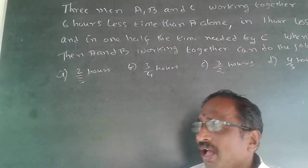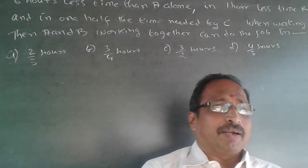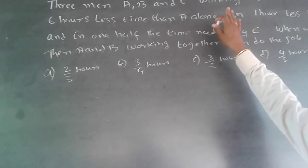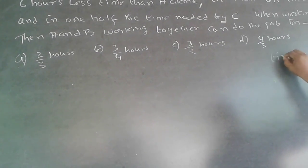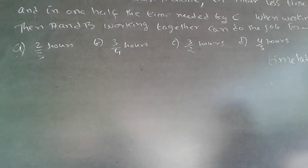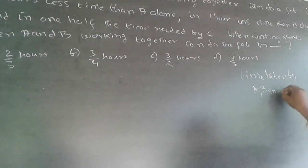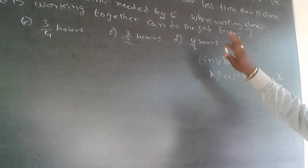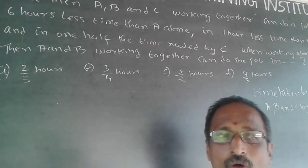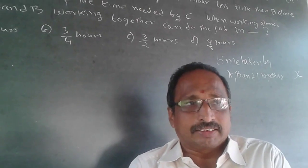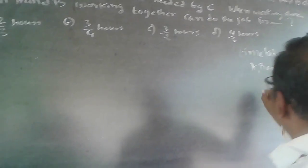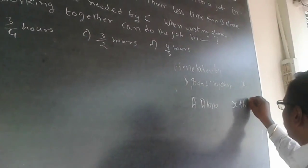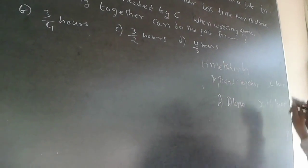The options are two by three hours, three by four hours, three by two hours, and four by three hours. Let the total time taken by A, B, and C together be x. Since they take six hours less time than A alone, A alone can do it in x plus six hours.